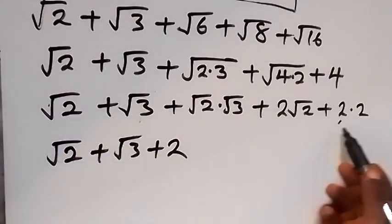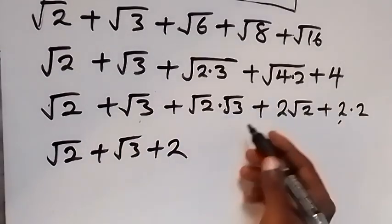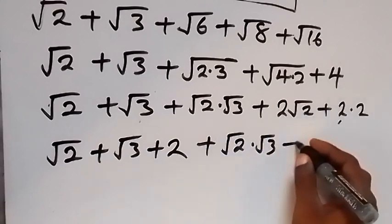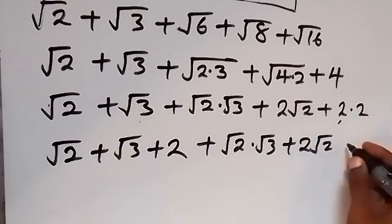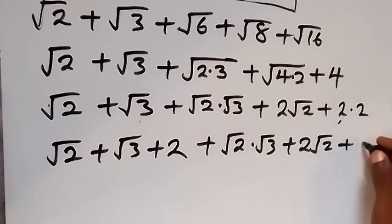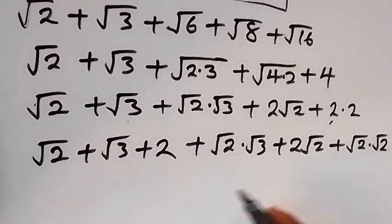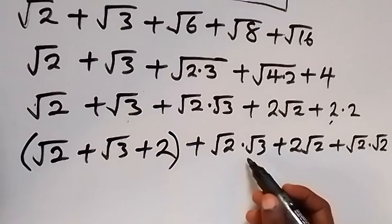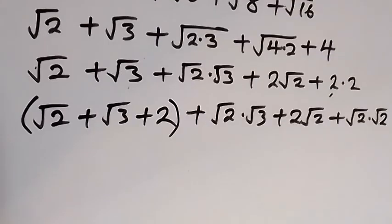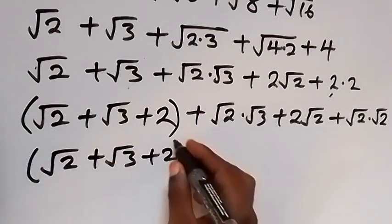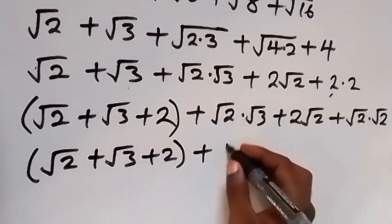We also have plus root 2 times root 3, plus 2 root 2, plus additional root 2 terms — writing the remaining 2 as root 2 times root 2. Now root 2 is common in those remaining terms, so we factor it out and place them in a bracket, giving root 2 times bracket, with root 2 common outside.